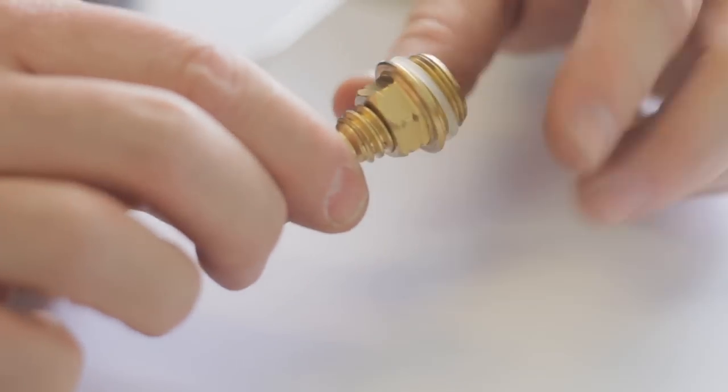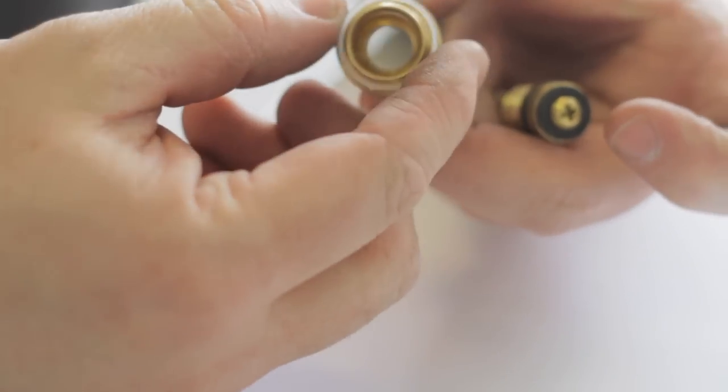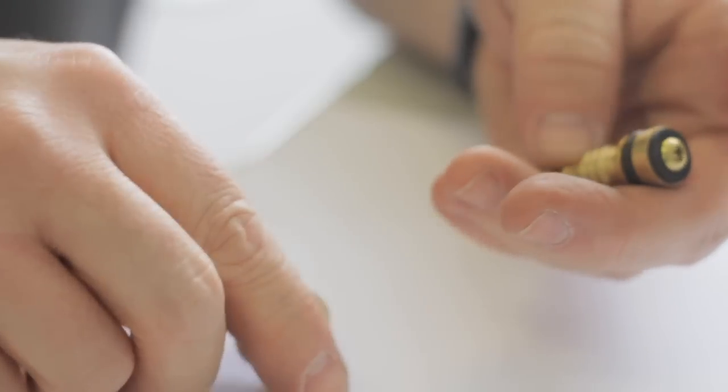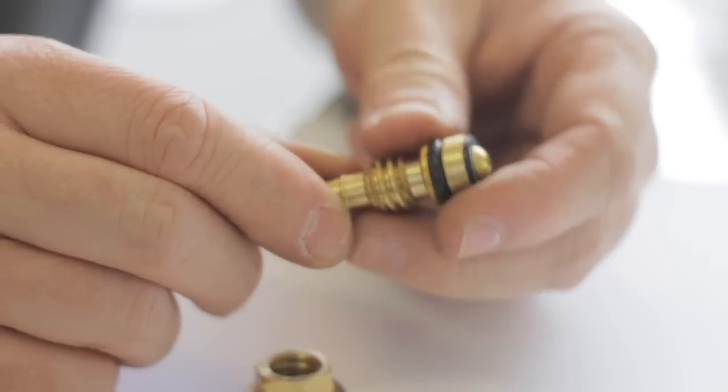Once you have your stem removed, there will be between two and three washers to replace. One is called a bonnet washer, two is the bib washer, three is the o-ring.